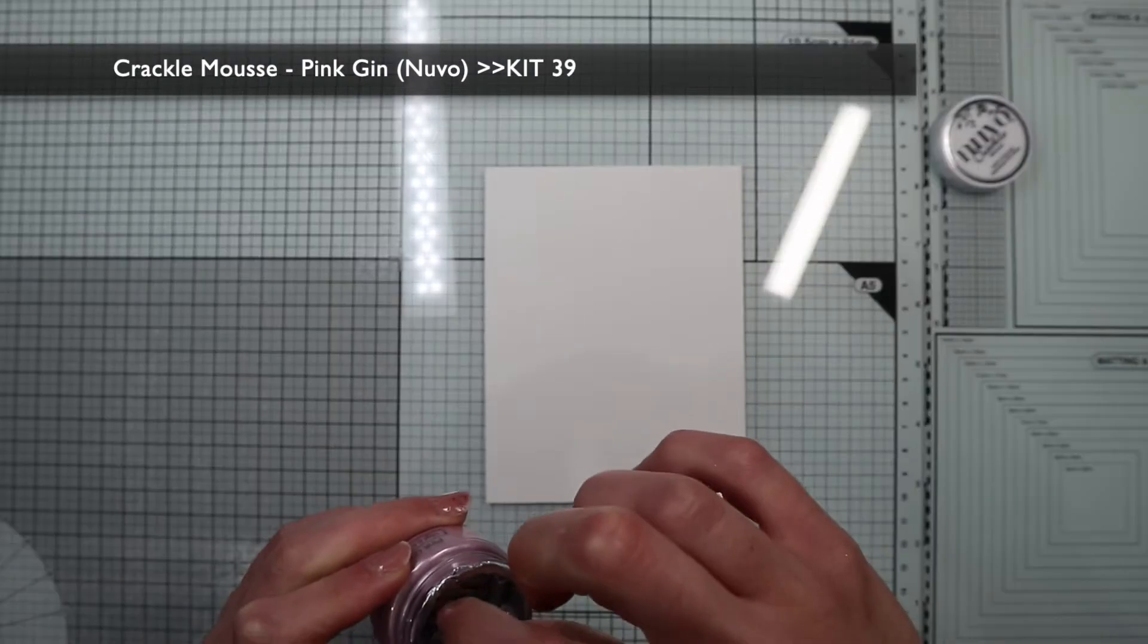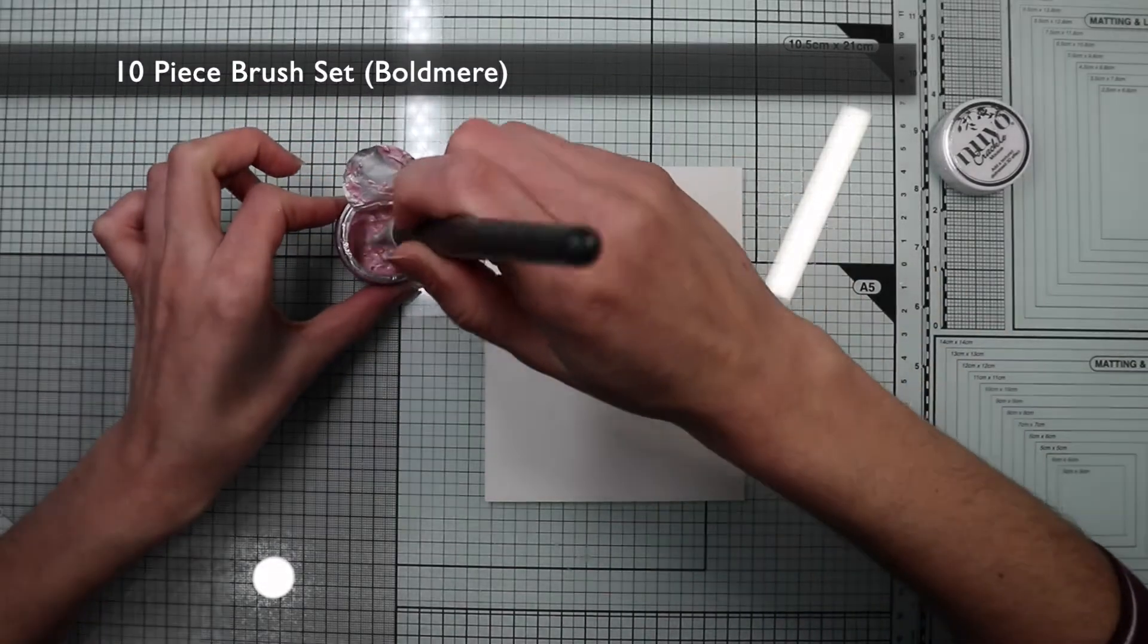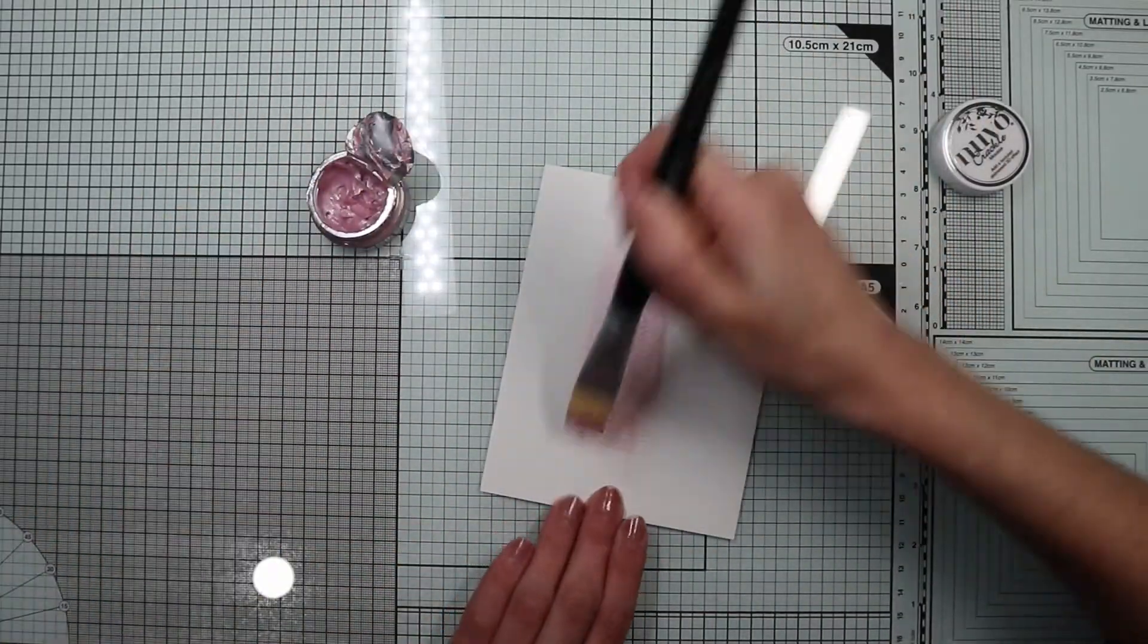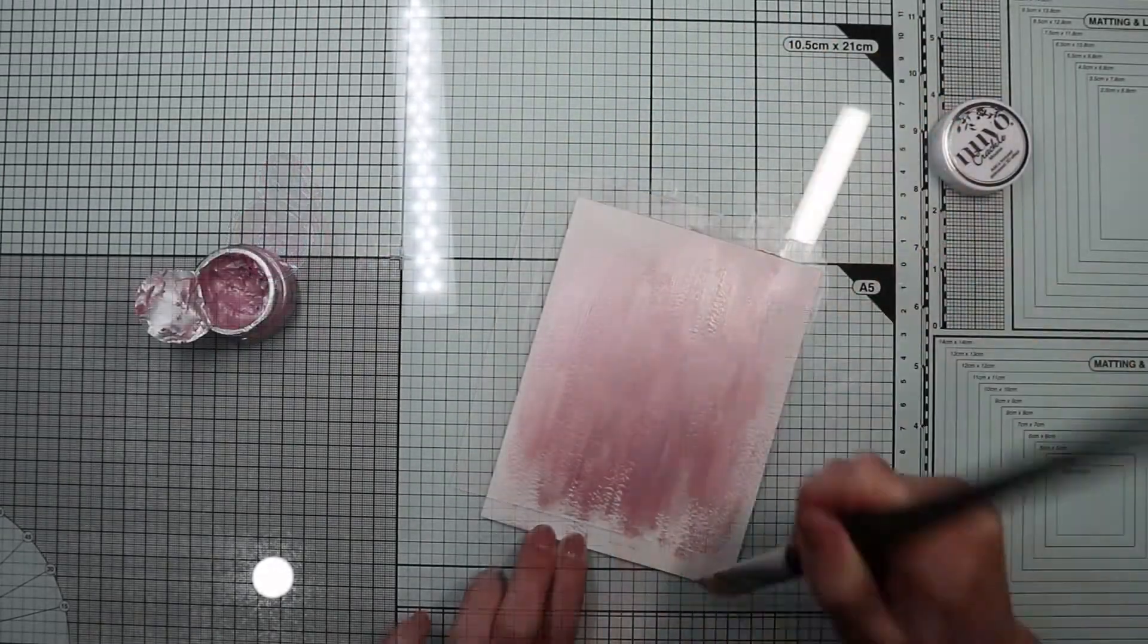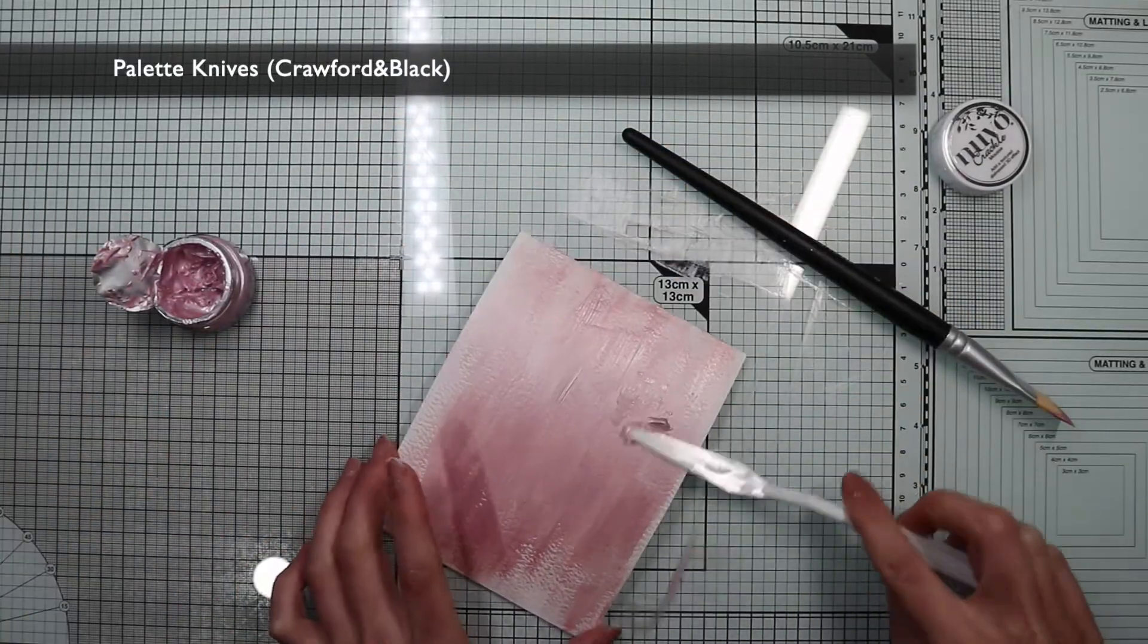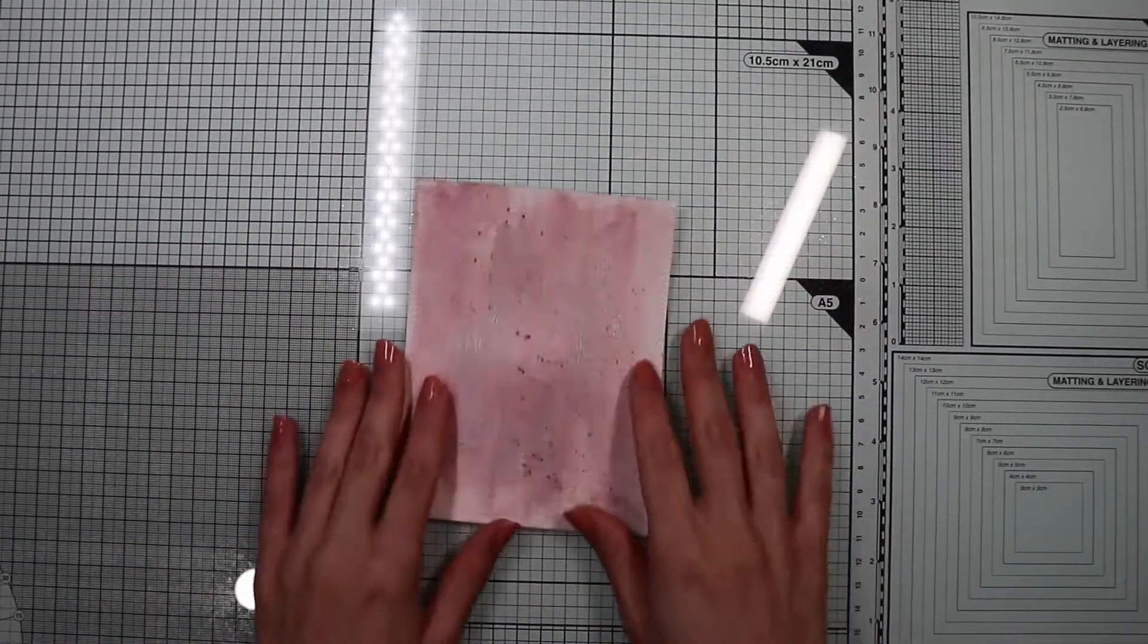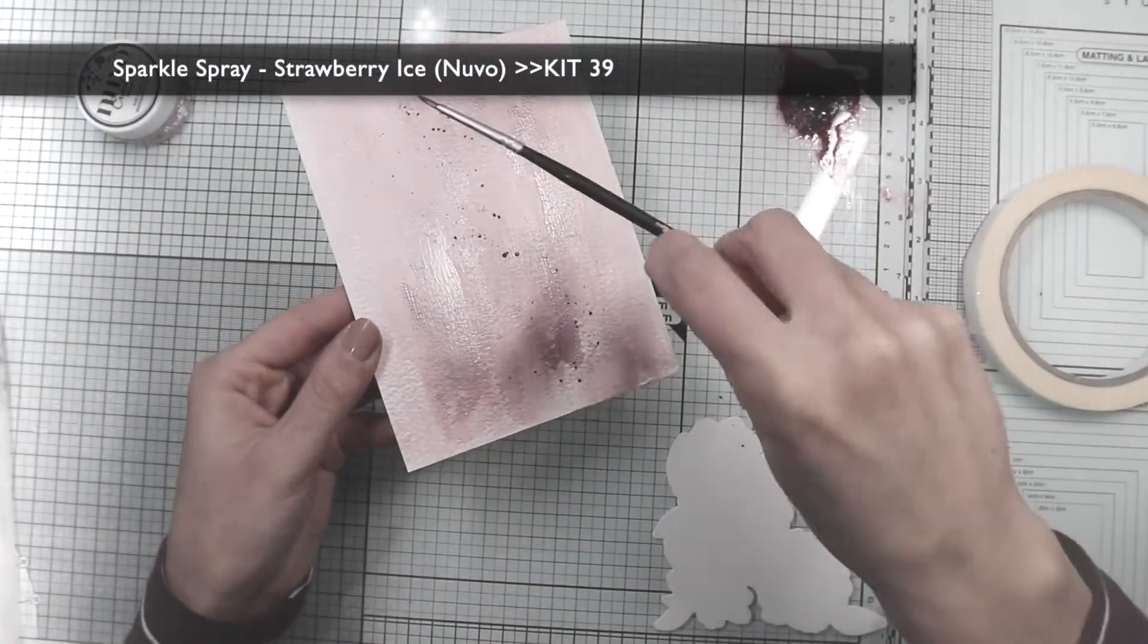In the last card of this video, I will create a background with the crackle mousse. One way to apply it is to spread it with a brush. I proceed to spread the crackle mousse on a panel of watercolor paper, making vertical movements with the brush. In some places, I'm going to apply thin layers. To create slightly thicker layers, I'm going to use a spatula. Once dry, you will notice the differences in the cracks of the crackle paste based on the different thicknesses you have applied. This is the dry background where the crackle paste created this beautiful texture. I also added a few drops of sparkle spray just to add some interest.